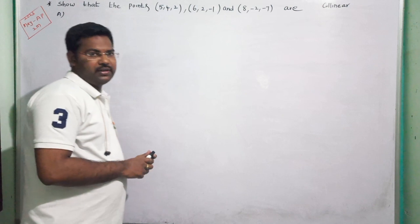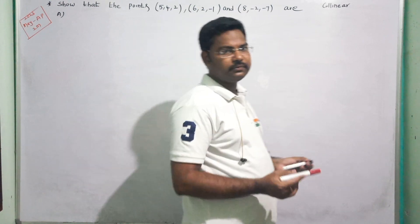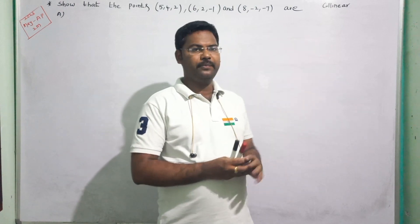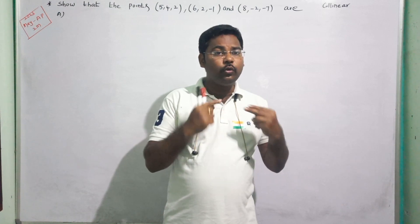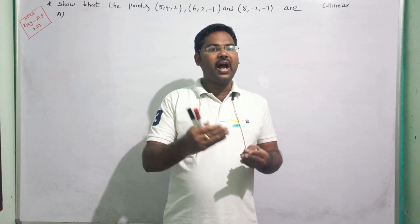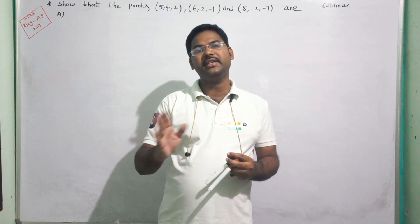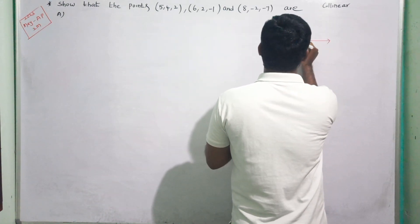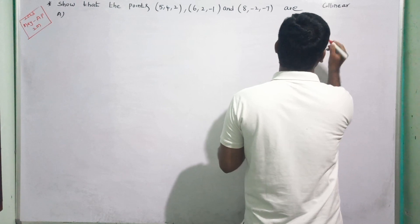We will explain step by step. So, to show that the points are collinear. First, let us look at the collinearity definition. If two or more than two points lie on the same line, then the given points are called collinear. For example, on a line, if points A, B, and C all lie on the same line, then ABC are collinear.